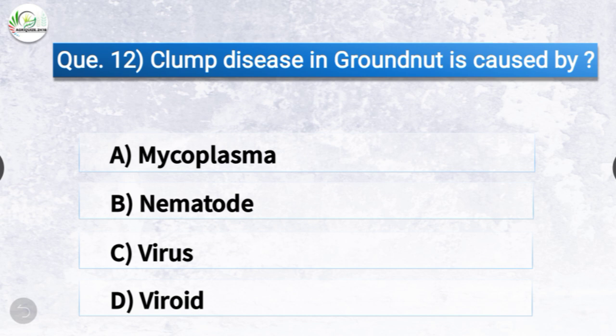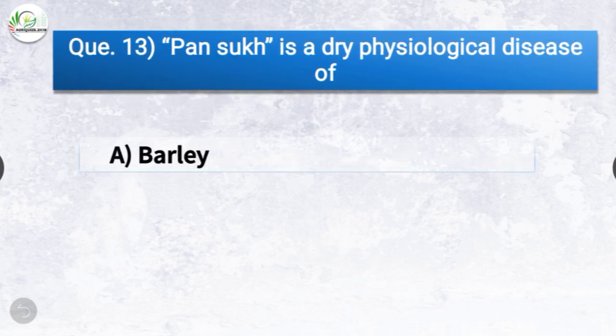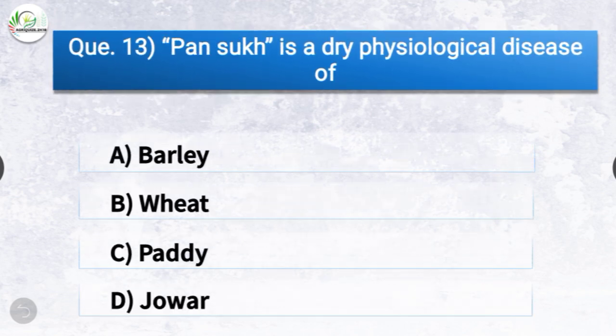Question number twelve: Clump disease in groundnut is caused by dash. The options are mycoplasma, mycoplasma-nematode, virus, or viroid. The correct answer is option C, virus. Clump disease in groundnut is caused by virus. Question number thirteen: Pansukh is a dry physiological disease of dash. The options are barley, wheat, paddy, or jowar. The correct answer is option C, paddy. Pansukh is a dry physiological disease of paddy.